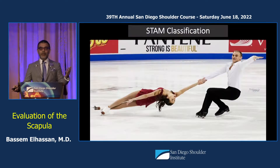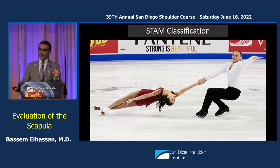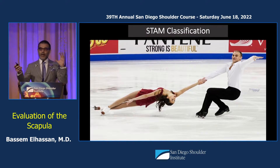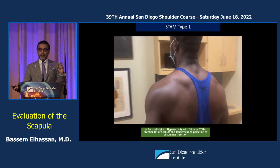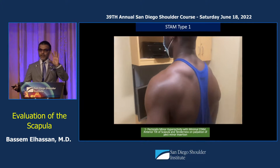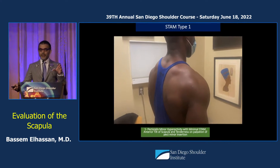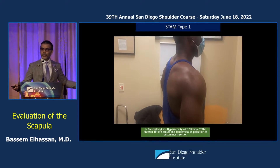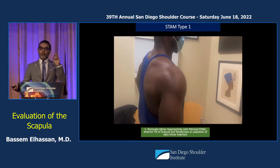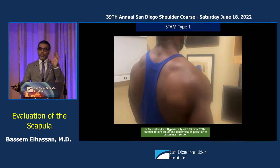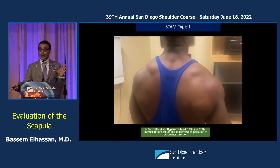We came up with a STAM classification that encases 95% of everything about scapulothoracic abnormality. STAM 1 is when you have pectoralis minor hyperactivity with minimal STAM — the patient has anterior tilt with hyperactivation of the upper trapezius and some limitation of motion. This is what a simple pectoralis minor release will help, without addressing the scapula itself.